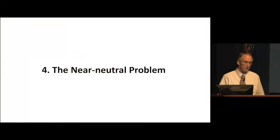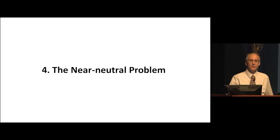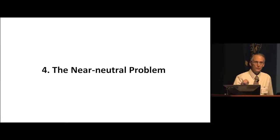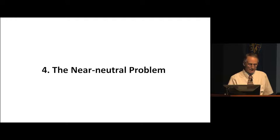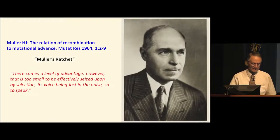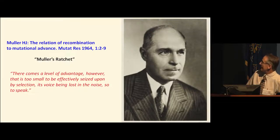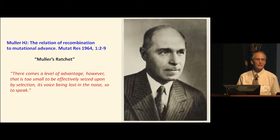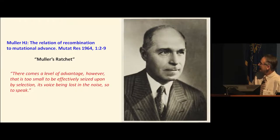Even if we could solve the other three problems, a deleterious mutation rate of three or more ensures continuous degeneration and the proposed escape mechanisms are not credible. The fourth problem, the near-neutral problem, is the most significant and a longer-term concern. Mueller first recognized it: there comes a level of advantage so small it cannot be effectively seized upon by selection — its voice lost in the noise. Think of a genome of three billion letters — changing one letter randomly will have a tiny fitness effect. It's like rust on a car: you can't see each rust event, but it is continuous and destructive.